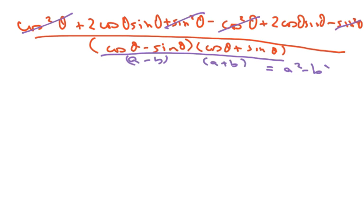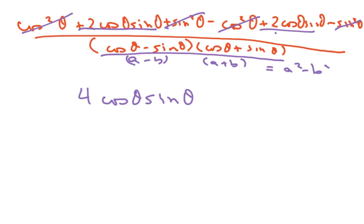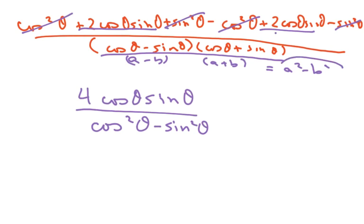The sine squared terms cancel, and I have four of these — I have two here and two here — so that's four cosine theta sine theta. And my denominator is just going to be cosine squared of theta minus sine squared of theta, using my a squared minus b squared.